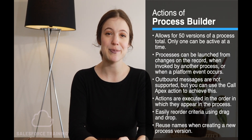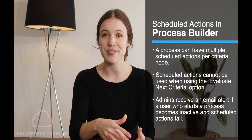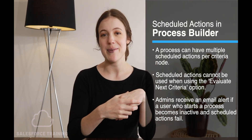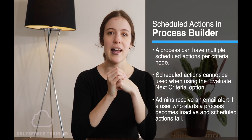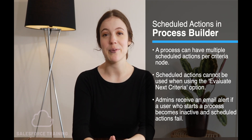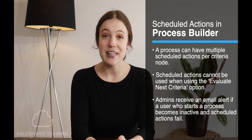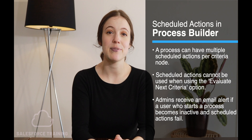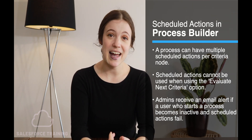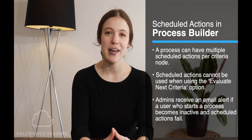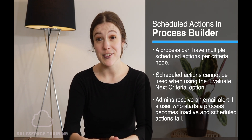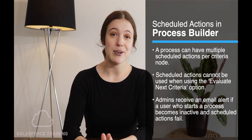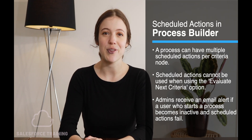One thing I really want to highlight is scheduled actions. A process can have multiple scheduled actions per criteria node, meaning if you evaluate certain criteria and take action based on that, you can have multiple scheduled actions in that path. Scheduled actions cannot be used when the 'evaluate next criteria' option is in play, and admins will receive an alert if a user who starts a process becomes inactive and a scheduled action fails. So while scheduled actions are really handy for automation, you need to think about the 'evaluate next criteria' option, and watch for those alert emails as an admin if a process user becomes inactive.